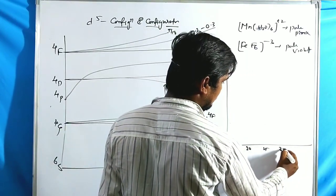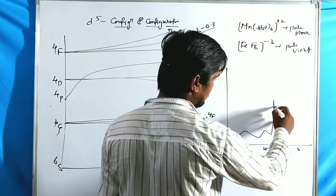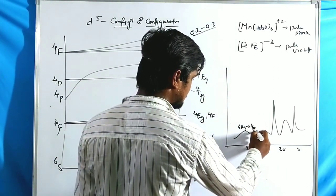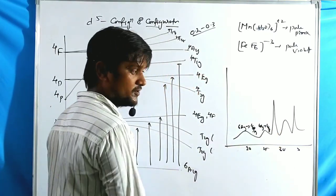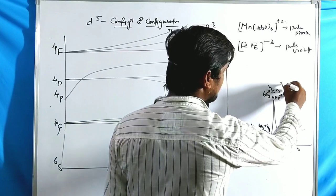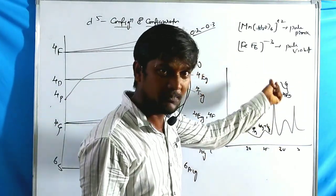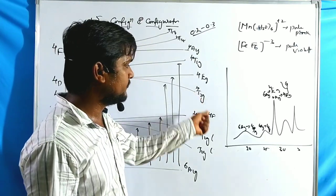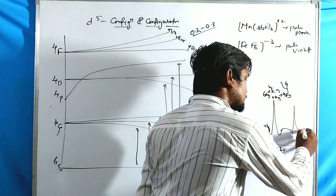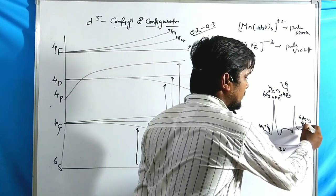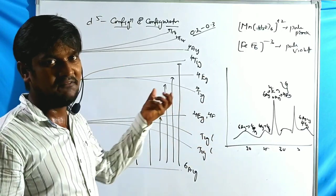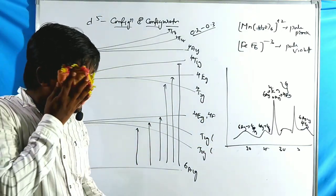In the absorption spectrum, at wavenumbers around 20,000–35,000 cm⁻¹, very low intensity peaks are observed. The transitions are: ⁶A₁g→⁴T₁g, ⁶A₁g→⁴T₂g from G terms, ⁶A₁g→⁴Eg and ⁶A₁g→⁴A₂g (showing a sharp peak due to slope zero), and finally ⁶A₁g→⁴T₁g of the P term.